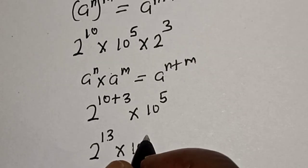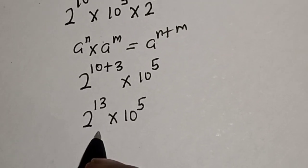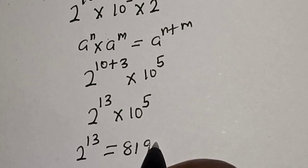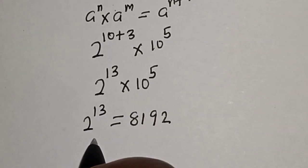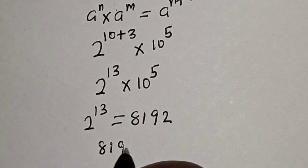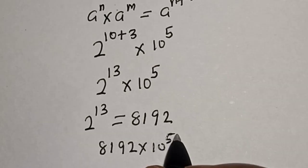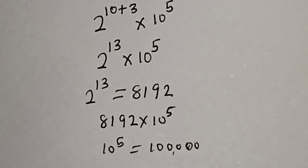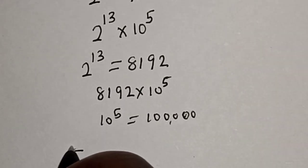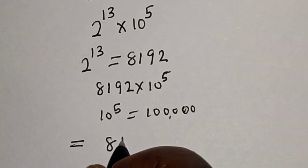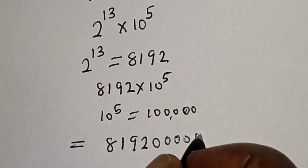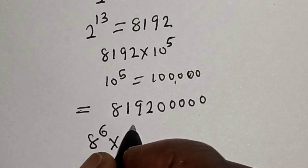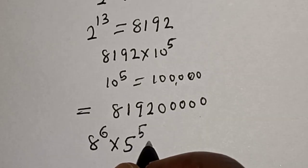So we have 2 raised to power 13, multiplied by 10 raised to power 5. Now 2 raised to power 13 is equal to 8192. This becomes 8192 multiplied by 10 raised to power 5, and 10 raised to power 5 is equal to 100,000. So multiplying everything together, this is equal to 819,200,000.